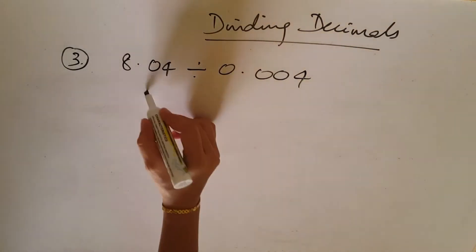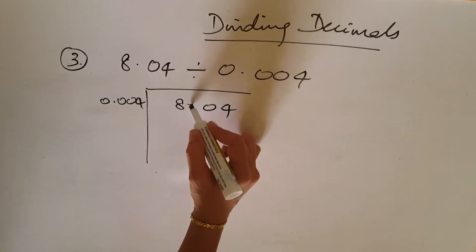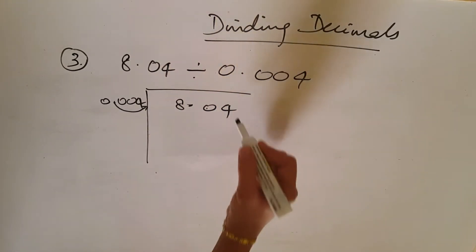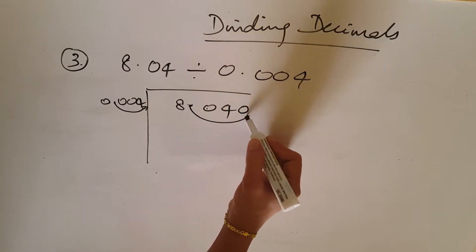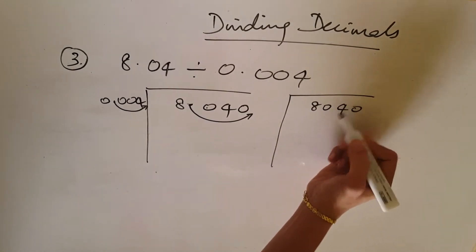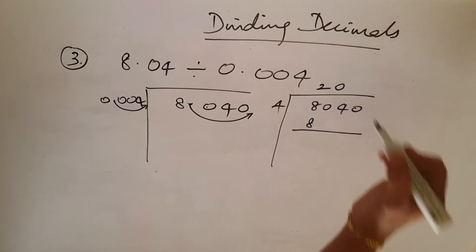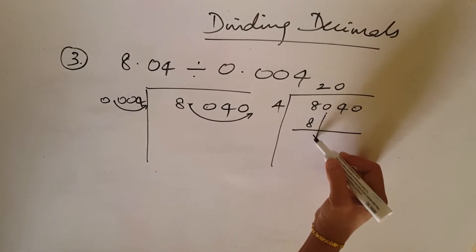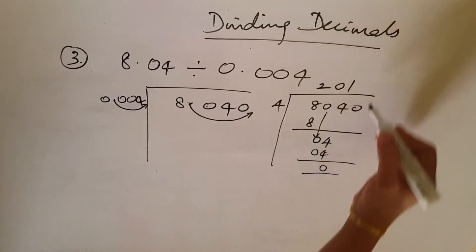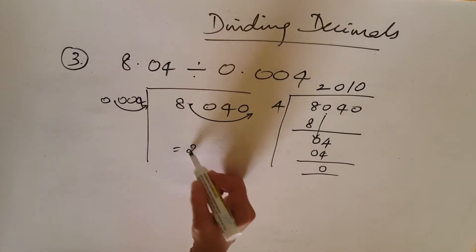Now the division method for 8.04 divided by 0.004. The divisor has 3 decimal digits; the numerator only has 2, so we add one extra zero, making it 8040 divided by 4. Dividing: 2 fours are 8, bring down 0 — place 0 up top, bring down 4 — 1 four is 4, remainder 0, place 0. The answer is 2010.